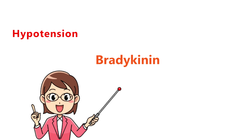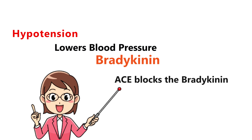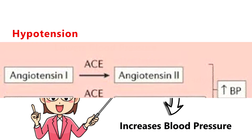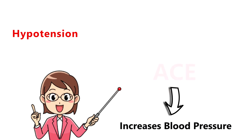Bradykinin causes hypotension and lowers blood pressure. Angiotensin 2, on the other hand, increases blood pressure. So ACE plays a role in raising blood pressure, leading to hypertension.